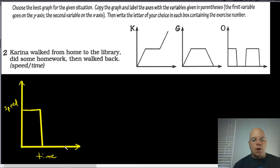Then she walks back home, so her speed goes from zero back up to her typical walking speed. And then she walks back home, which takes some amount of time, and then I guess she gets home and she stops walking again. So the graph that matches that is O. So for number two, we'll choose O as the best graph to represent that situation. So underneath number two you put the letter O.